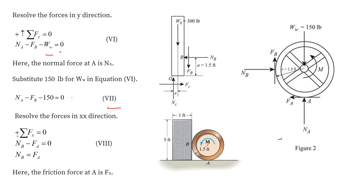Now resolving forces in the x direction on the wheel. Taking the summation of all forces equal to zero — the normal reaction at point B on the wheel is in the rightward direction and the friction force at point A is toward the left. So we write: Nb = Fa. We name this equation 8.